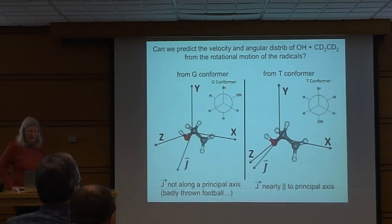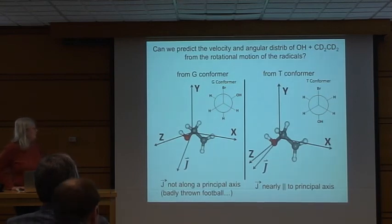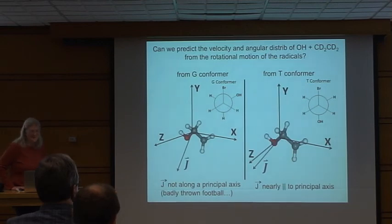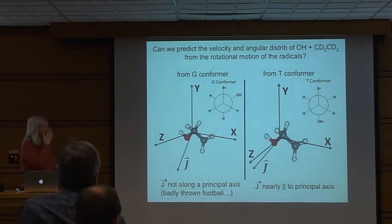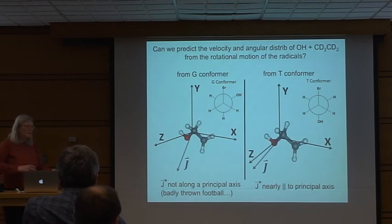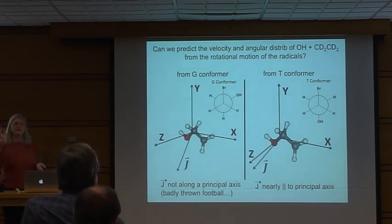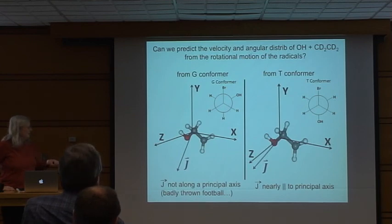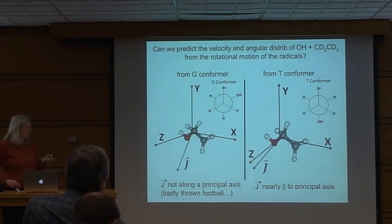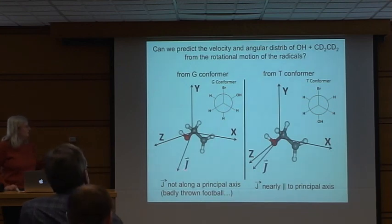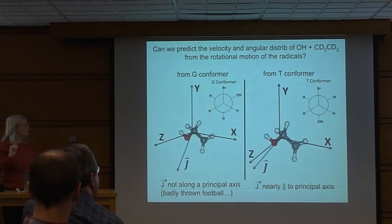Since Carrie left, I have a very smart guy in my group who just graduated. He applied for a job last January, got the job in June, and left in August — the most rapid post-doc transition I've ever seen. He thought: we know that the energy in rotation changes as a function of the geometry of the molecule. You can think of the radical from the top view where J is parallel to an inertial axis as a nicely thrown football — rotating around a principal axis, not tumbling. But from the gauche conformer, it's tumbling all over the place. He said we can simulate this tumbling.